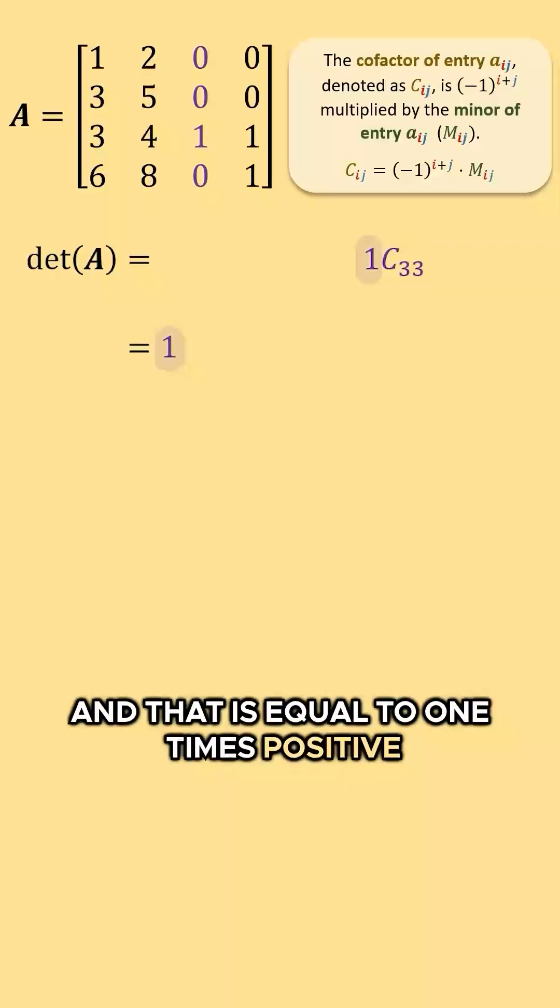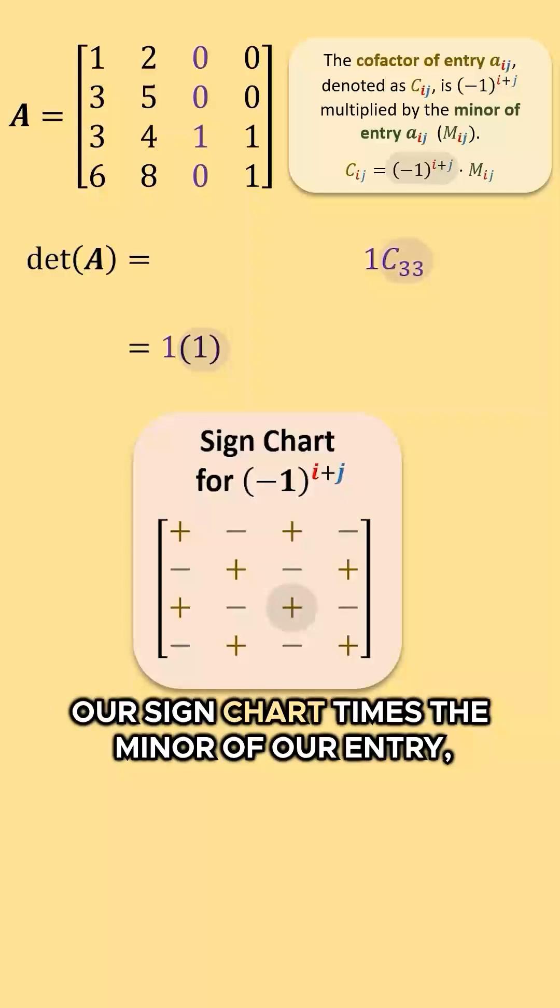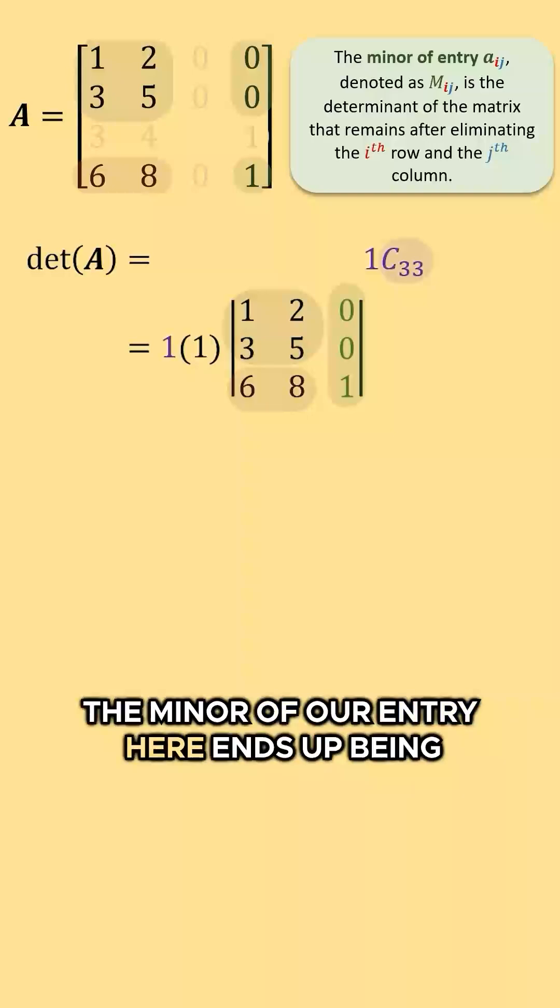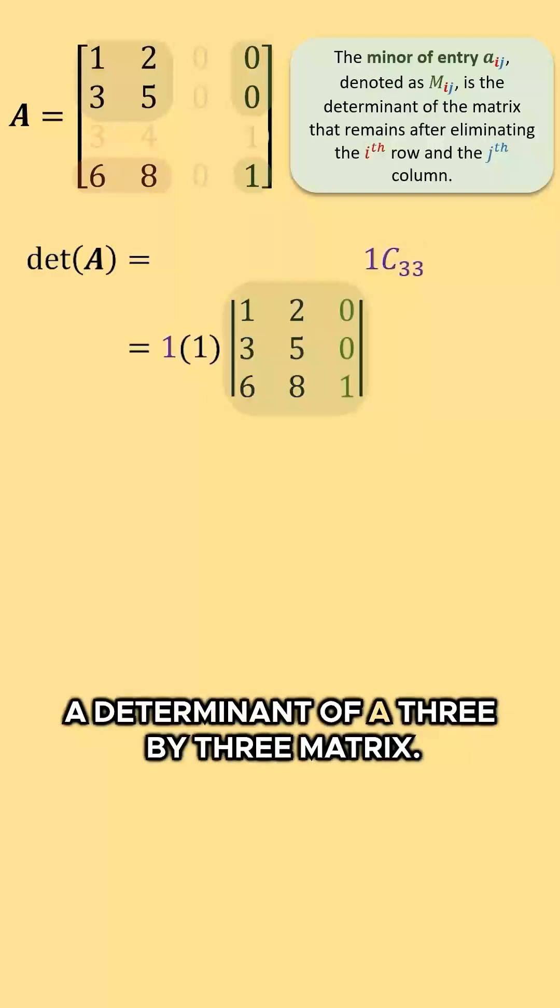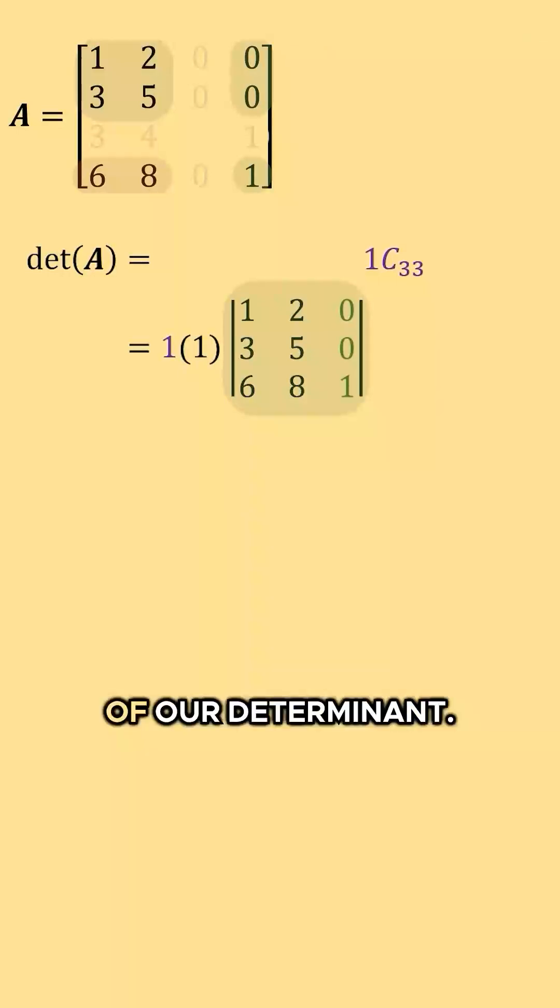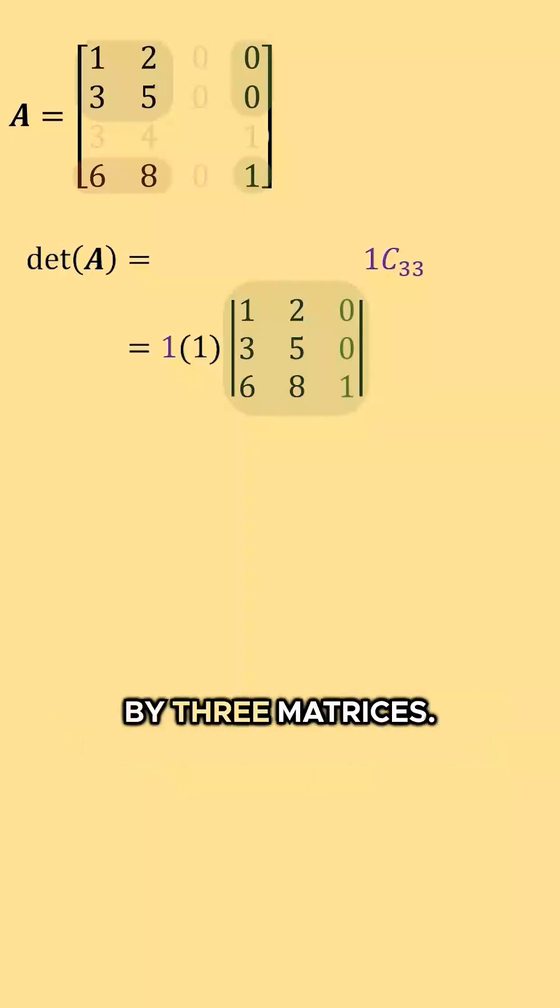And that is equal to 1 times positive 1 times the minor of our entry. The minor of our entry here ends up being a determinant of a 3x3 matrix. This cofactor expansion allowed us to reduce the dimension of our determinant. We are now working with determinants of 3x3 matrices.